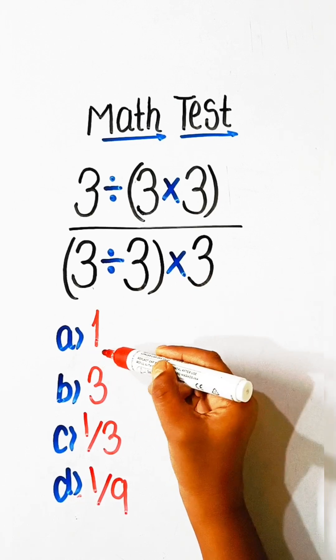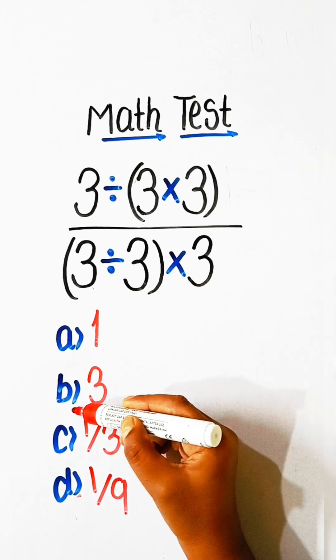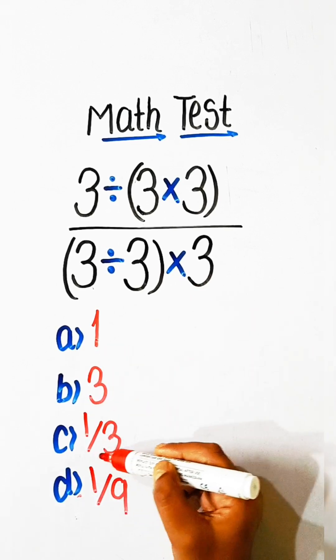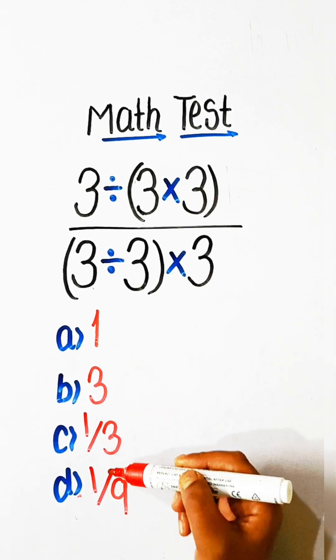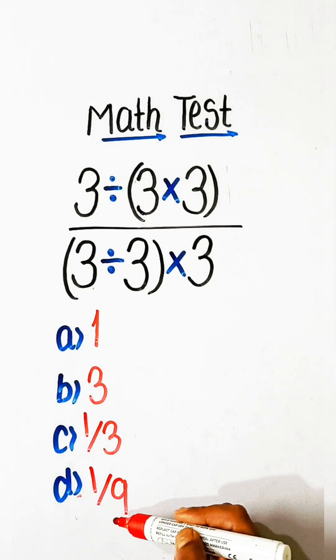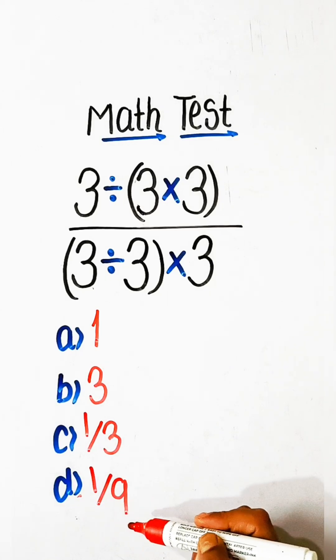Option A: 1, Option B: 3, Option C: 1 upon 3, or Option D: 1 upon 9.